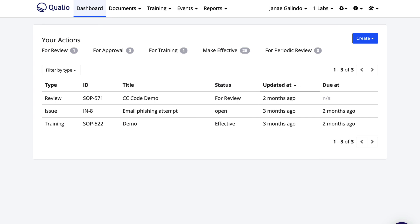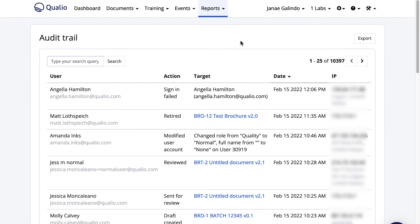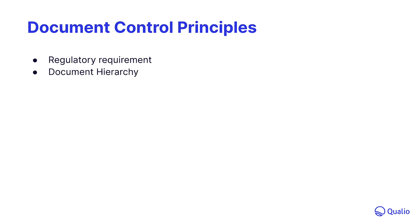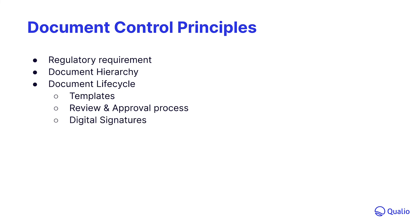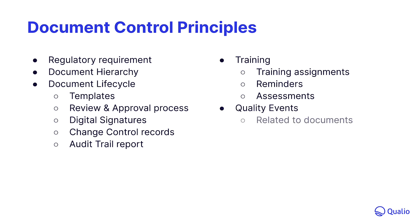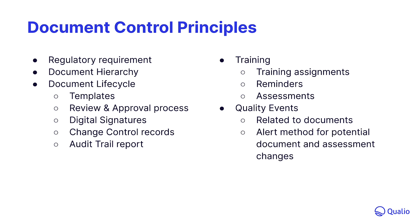Speaking of audits, the audit trail report has logged all the activities demonstrated today, along with who performed the action and when. This automated log is a physical representation of document control that would otherwise have to be logged manually if you weren't using an eQMS. Today you've learned how Qualio helps you manage document control regulatory requirements. We've talked about the document hierarchy and how to use smart links to connect your documents. You've seen the entire document lifecycle and control measures like templates, review and approval processes, digital signatures upon approval, and the change control record along with the audit trail report. We've demonstrated how to leverage training features like training assignments, sending reminders, and assessments to verify that employees are properly trained. And lastly, quality events can be related to effective documents and can help alert quality teams of potential document and assessment changes.